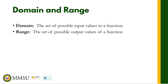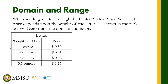So how do we define the domain and range of a function presented in a table? Here is an example: the table below shows that when sending a letter through the United States Postal Service, the price depends upon the weight of the letter. Weight not over 1, 2, 3, and 3.5 ounces corresponds to prices of 0.50, 0.71, 0.92, and 1.13.